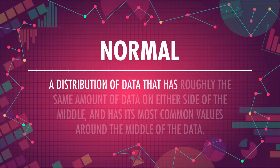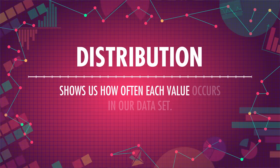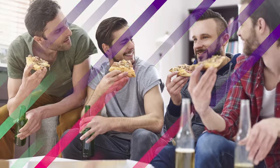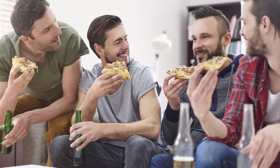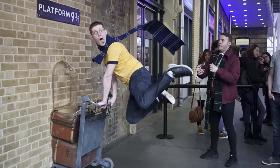The mean is good at measuring things that are relatively normally distributed. Normal means a distribution of data that has roughly the same amount of data on either side of the middle, and has its most common values right around the middle. Data that are distributed normally have a symmetrical bell shape. A distribution shows us how often each value occurs in our data set, which is known as their frequency. Imagine you're trying to impress your new college dorm mates by guessing how many times they've each seen Harry Potter and the Sorcerer's Stone. You overheard that 18-year-olds on average had seen the movie 5 times each, so you should guess 5 times each — unless you can clearly see Slytherin tattoos. You won't be right each time, but it's your best guess.